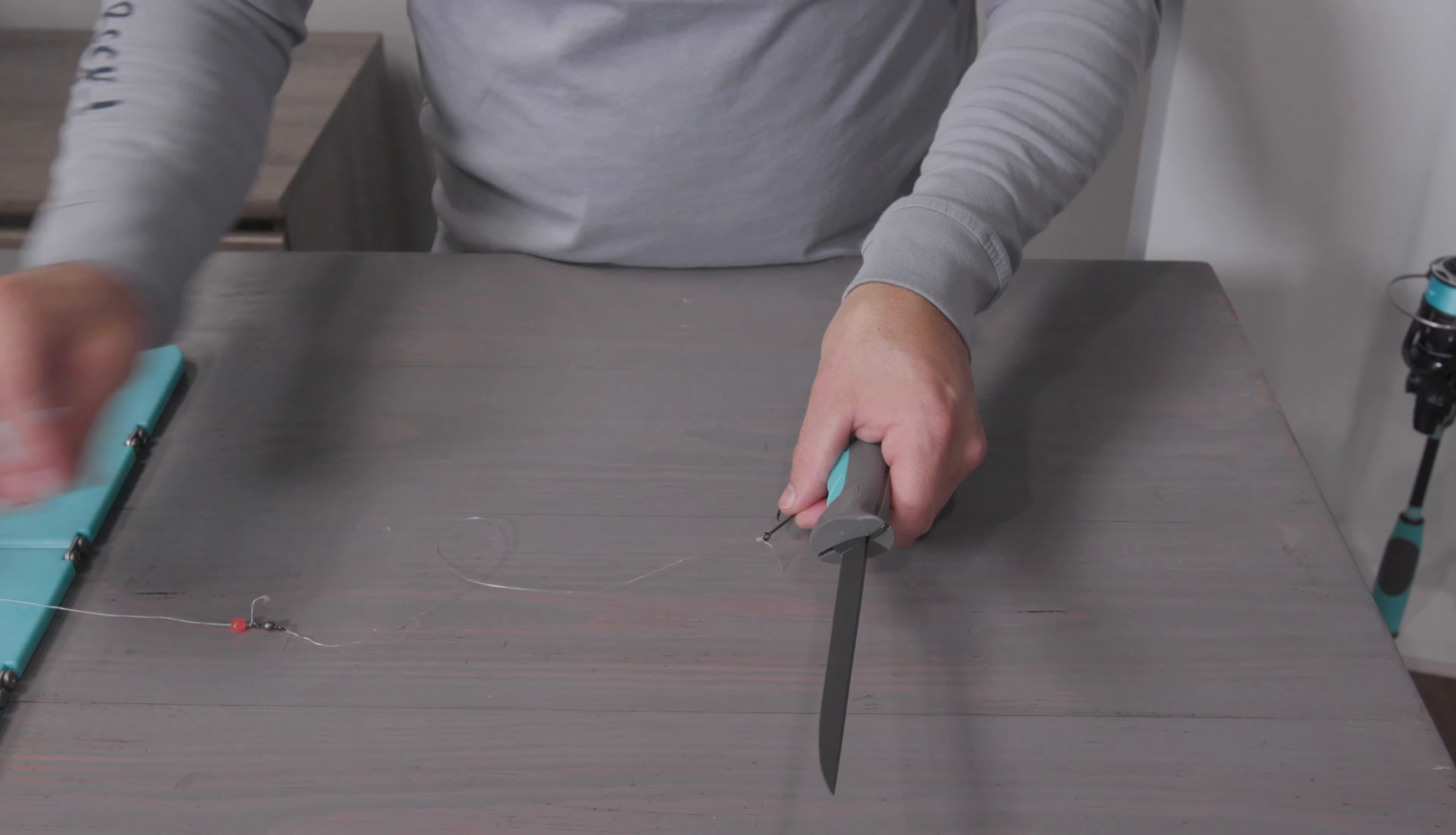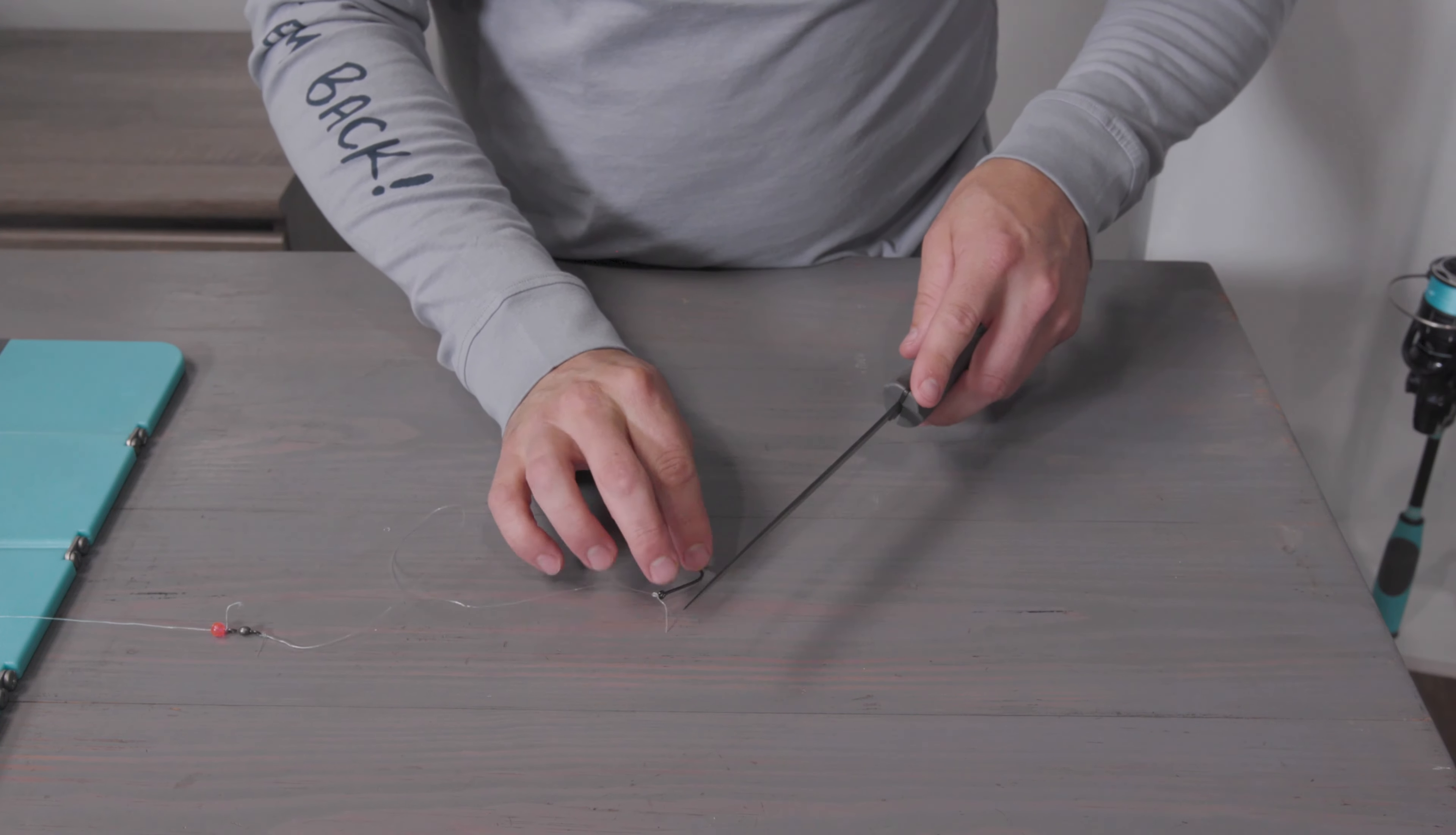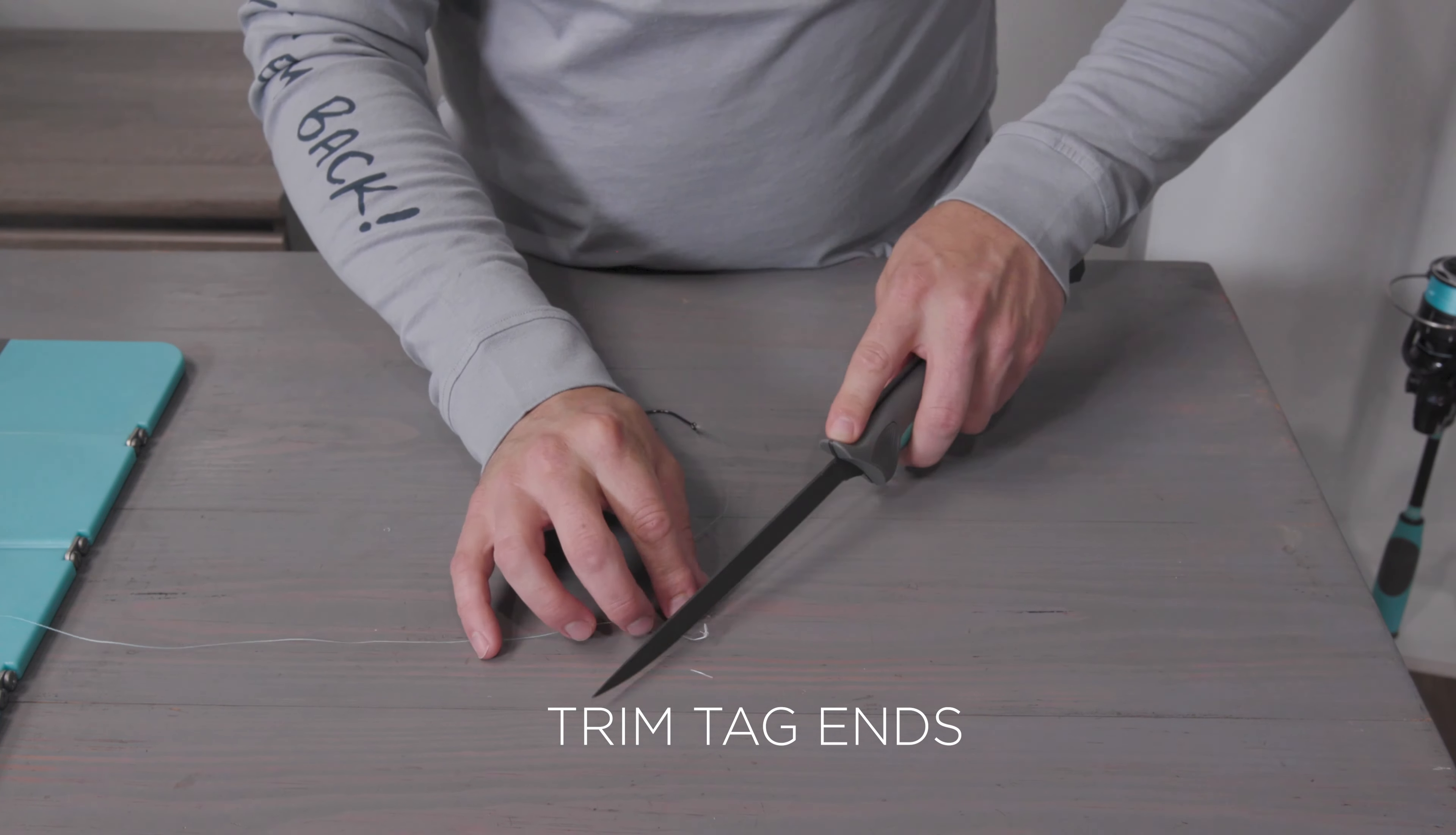Step number six: you want to come back with your Toadfish fillet knife and trim your tag ends.